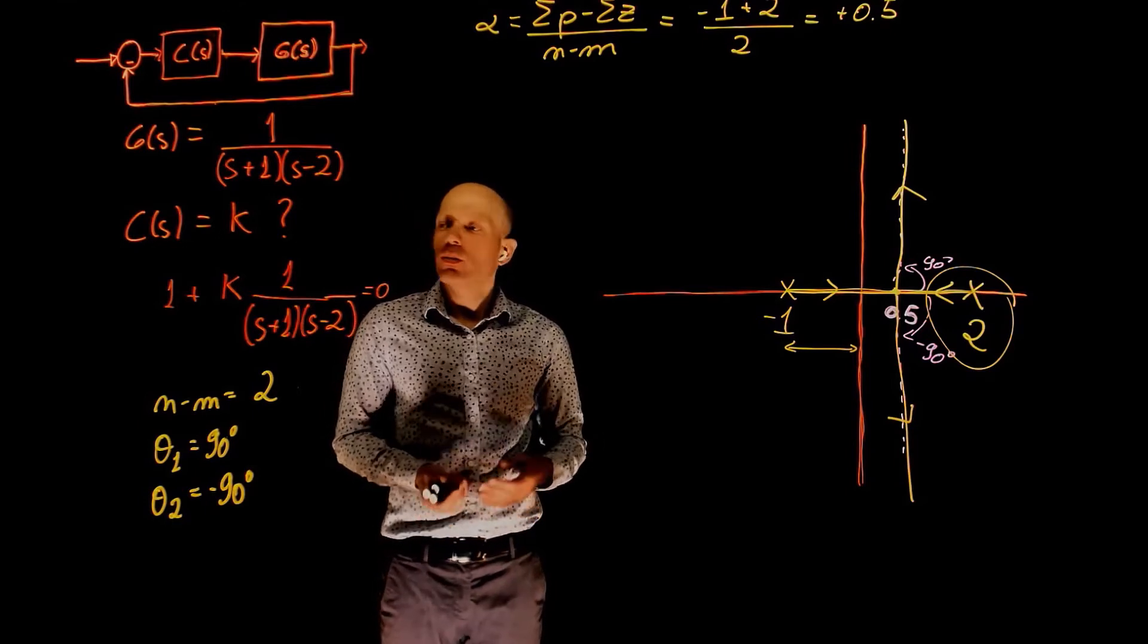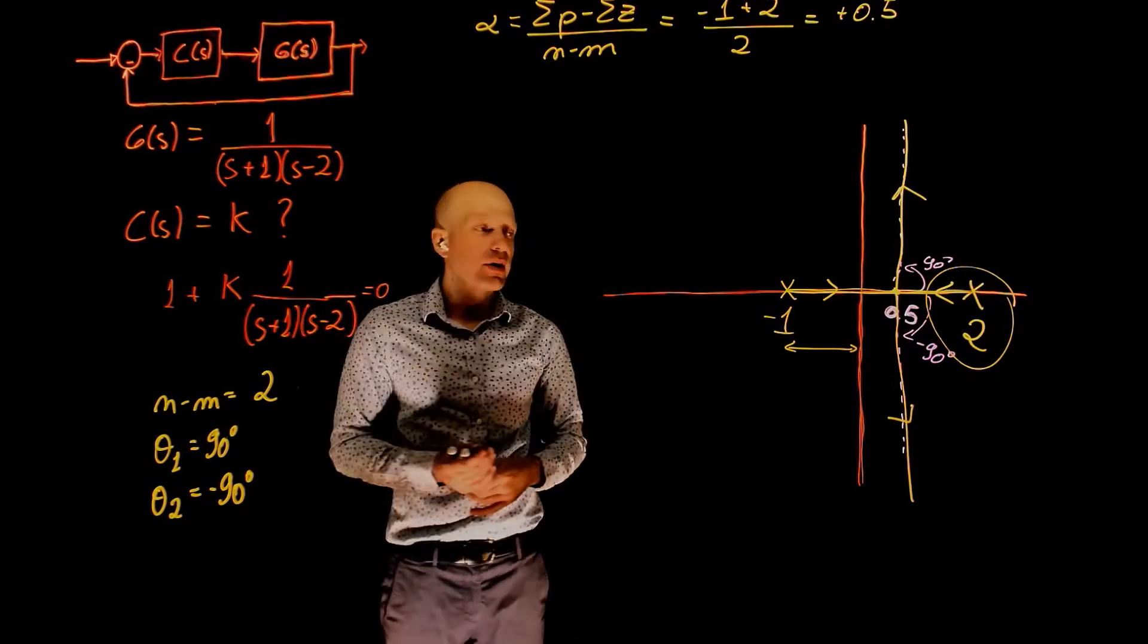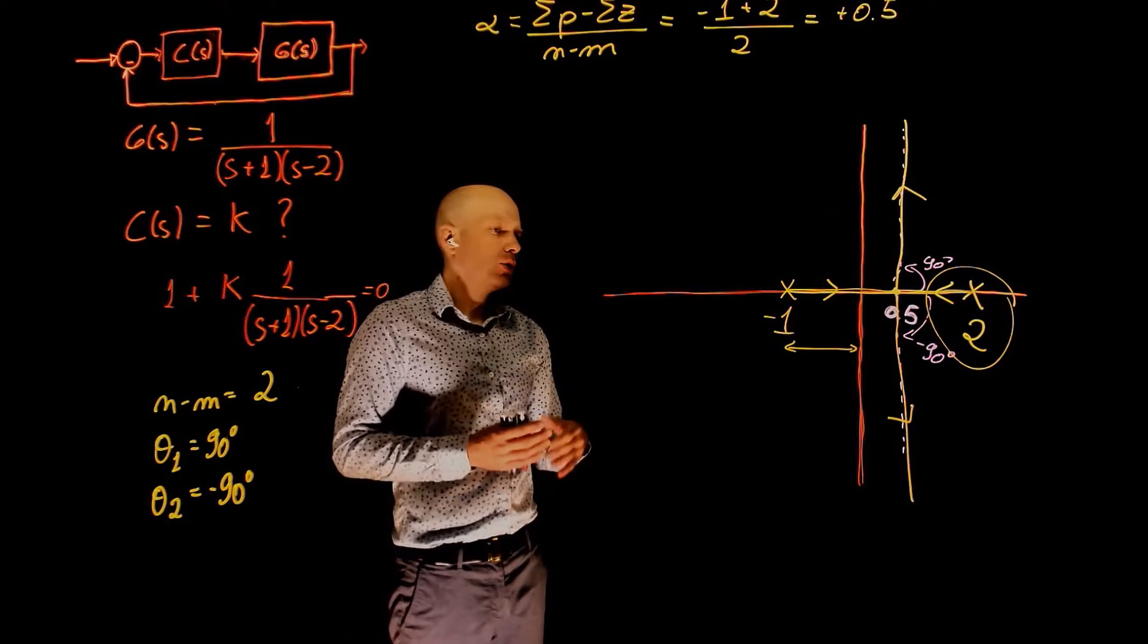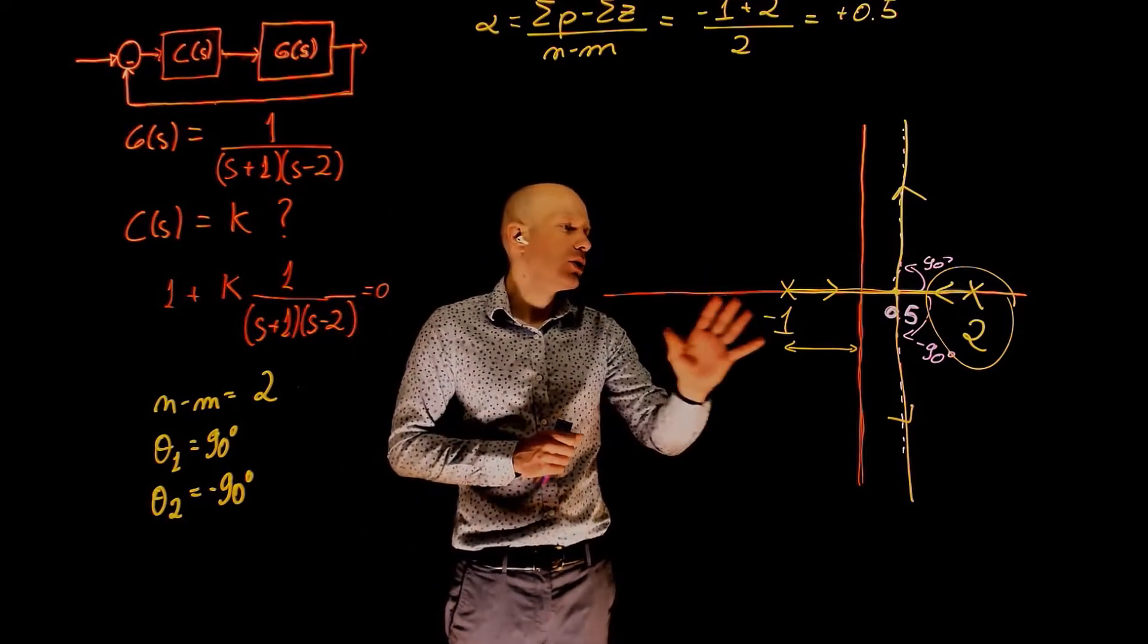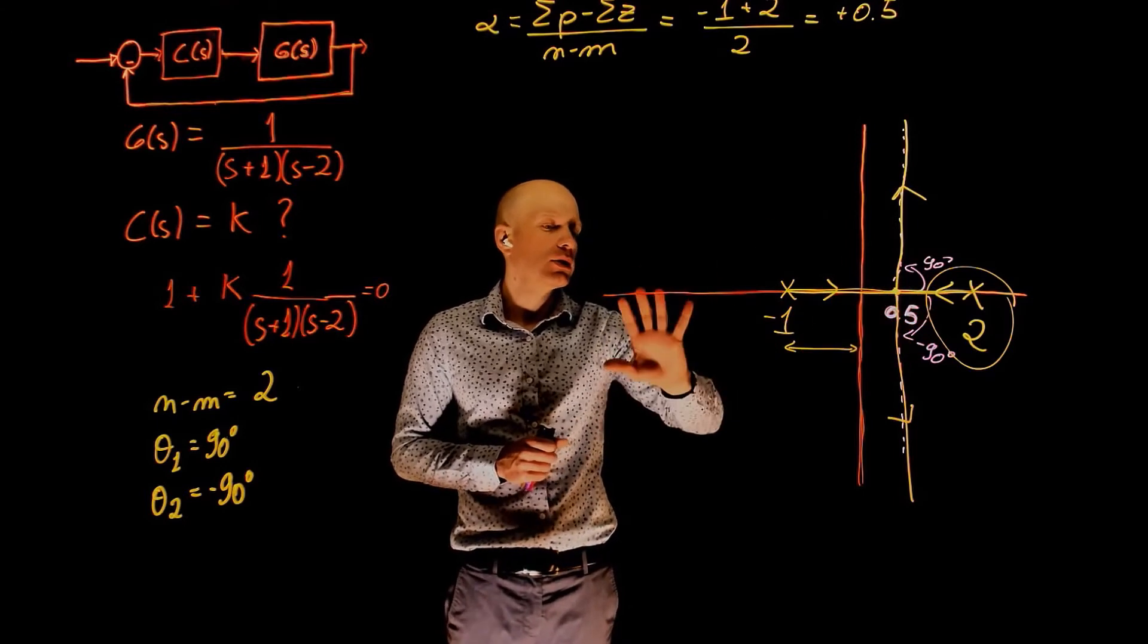Now let's think about this problem. What is a suitable controller C of s that would make the system stable? To do that, we need to add more zeros to the system, to this side of the plane, so that these poles are attracted to those zeros.